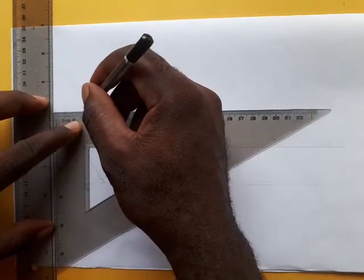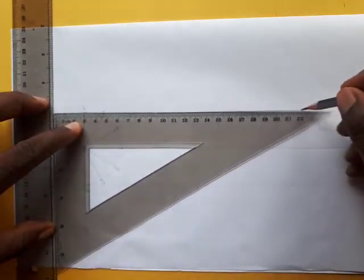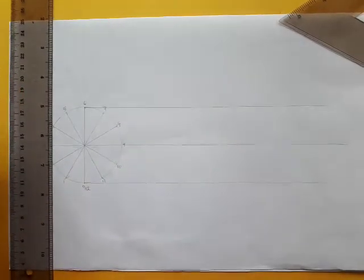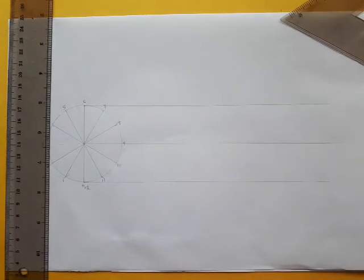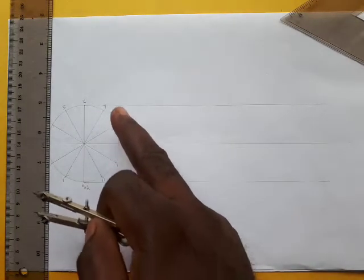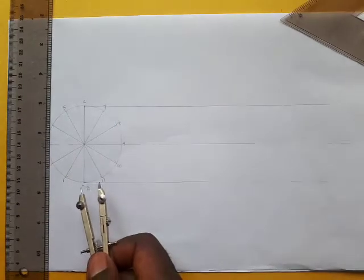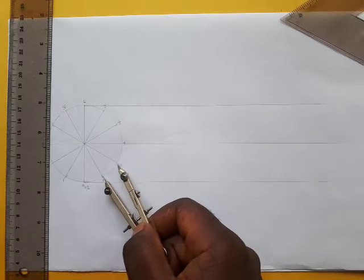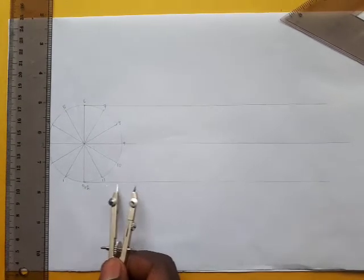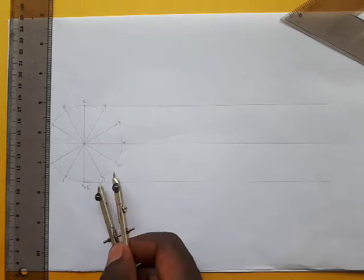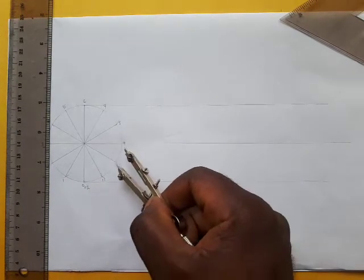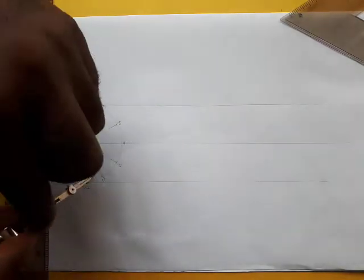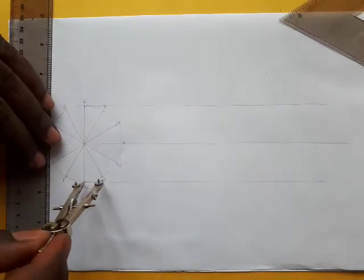After doing that, you know these divisions here, they are all equal. Just take one of them, say 0 to 11 or 11 to 10, they are all equal. Just take one of the divisions and step off 12 divisions on this line. So this is 1, 2, 3, 4, 5.